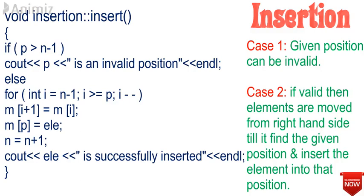In the second member function, the insert member function, we first need to check whether the given position exists or not using a simple if condition. That is, the given position should not be greater than the size of the array. Once this condition is checked, we proceed to free the memory at that position.